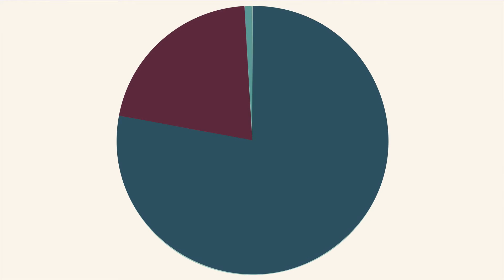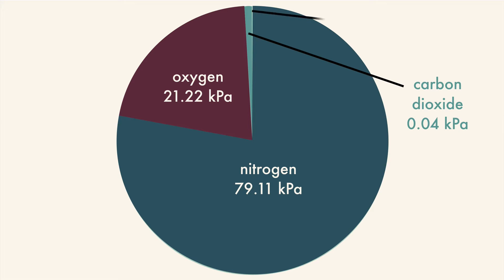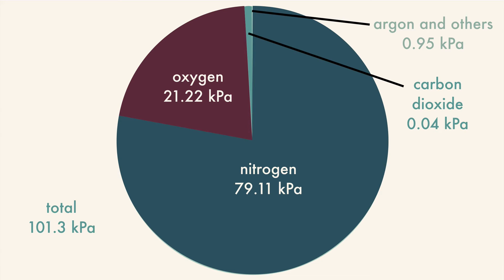The air we breathe isn't just oxygen — it's a mixture of gases. Each of these gases contributes part of the atmospheric pressure that we feel. Nitrogen produces 79.11 kPa of pressure. Oxygen produces 21.22 kPa. Carbon dioxide produces 0.04. And argon and other gases produce 0.95 kPa of pressure. All of these together add up to 101.3 kPa, which is the standard unit of pressure for our atmosphere.